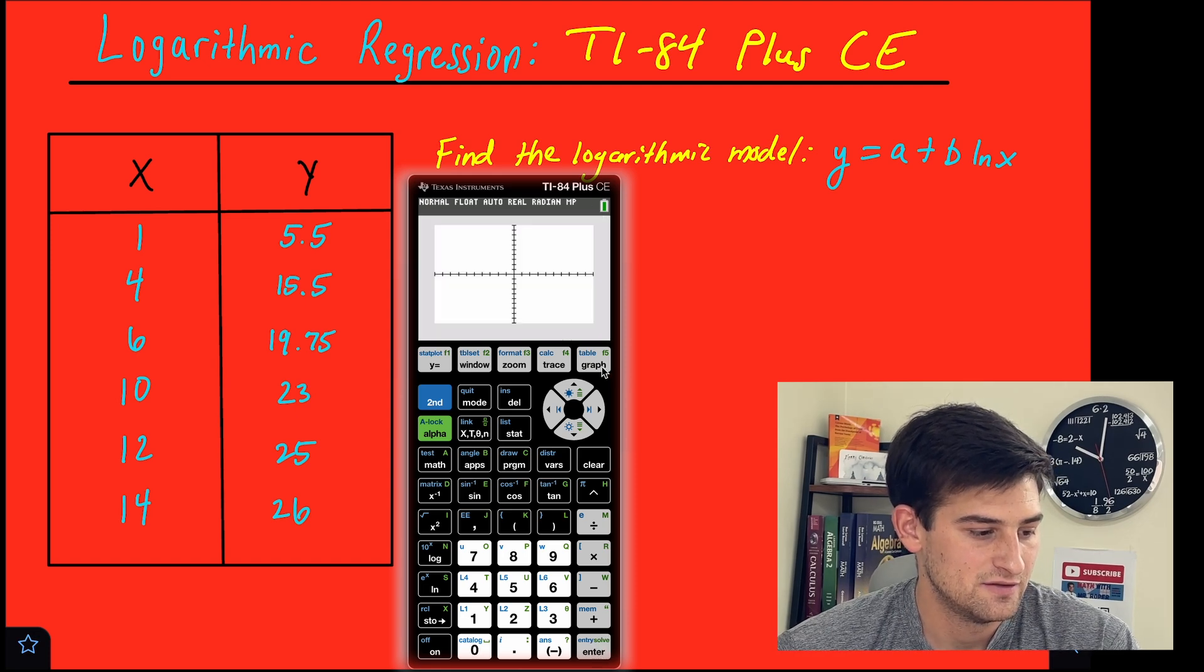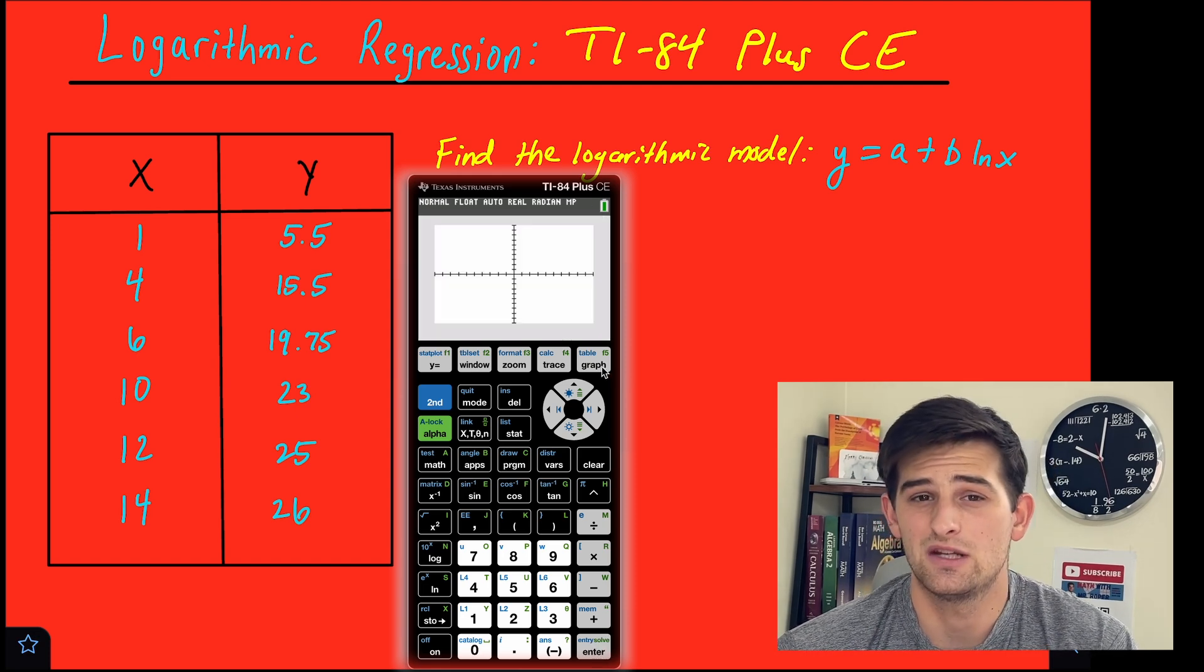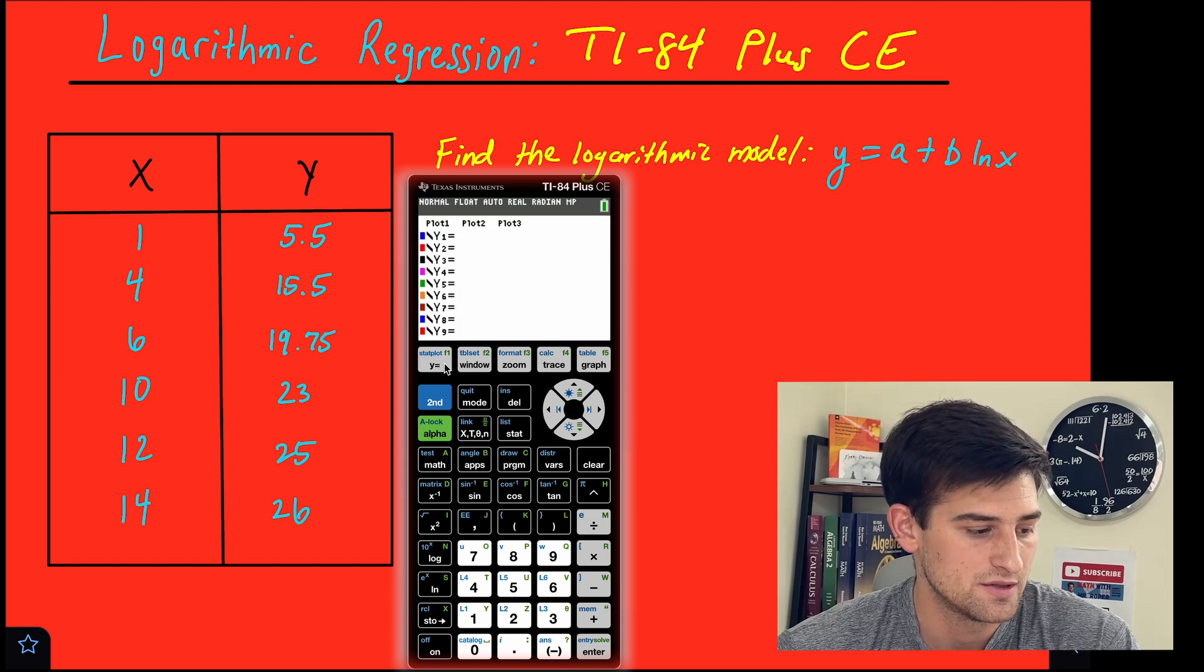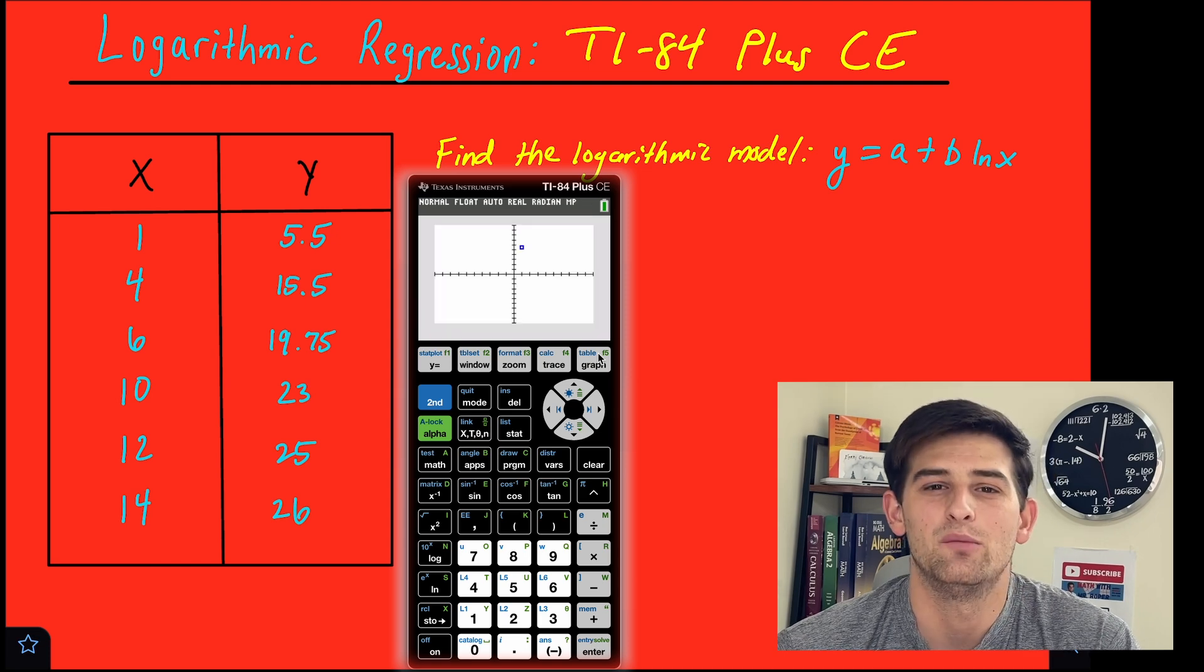Now, if I hit graph, we don't see anything. So there's a couple things we need to make sure of when using our graphing calculator to do a scatter plot. Number one, go to y equals. We need this plot one up here to be highlighted black. So go up to it, hit enter, graph, and we only see one point, right?